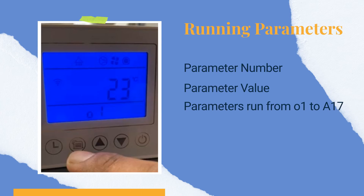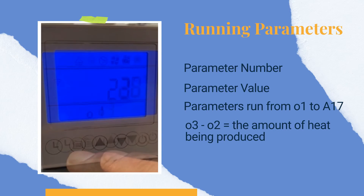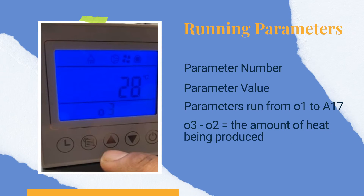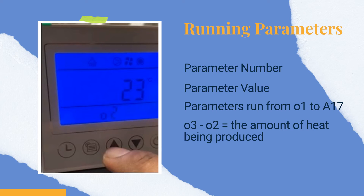Although there are several parameter numbers, the most important values for a user are O2 and O3. O3 minus O2 equals the amount of heat being produced. In this example, O3 is 28 and O2 is 23, which is producing a 5 degree delta, which is normal. If you have a very high or very low delta, this could be a sign of problems, and you should contact our technical support team for further analysis.